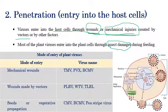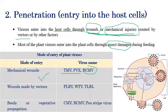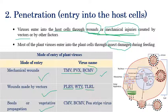Regarding the mode of entry: Tobacco mosaic virus, Potato virus X, and Bean common mosaic virus enter through mechanical wounds. Potato leaf roll virus, Wound tumor virus, and Tobacco leaf roll virus penetrate through wounds made by vectors. Cucumber mosaic virus and Pea stripe virus enter through seed or vegetative propagation.